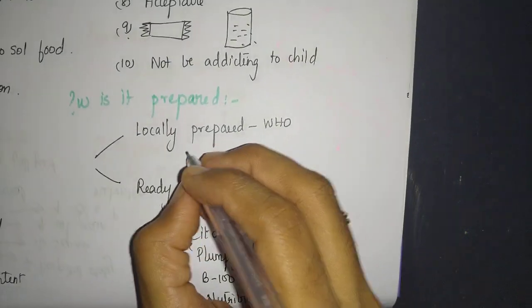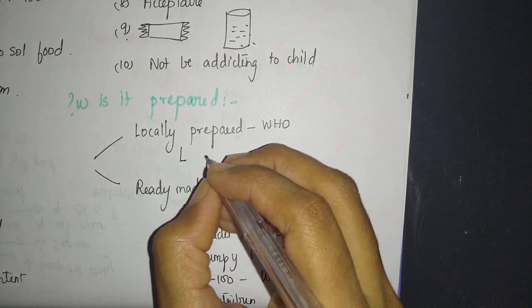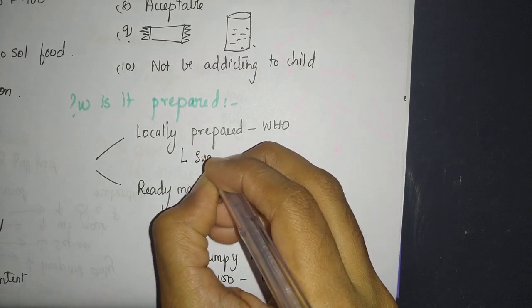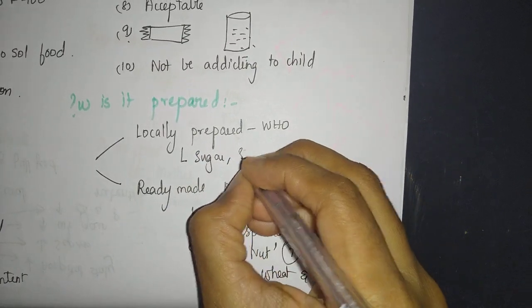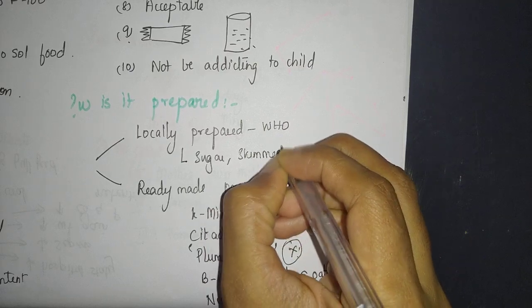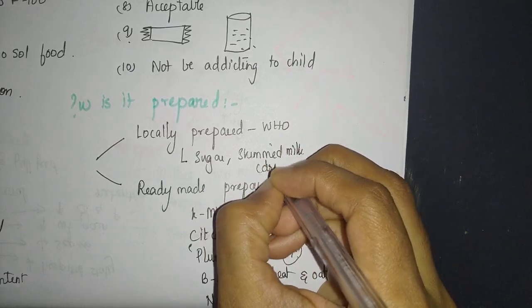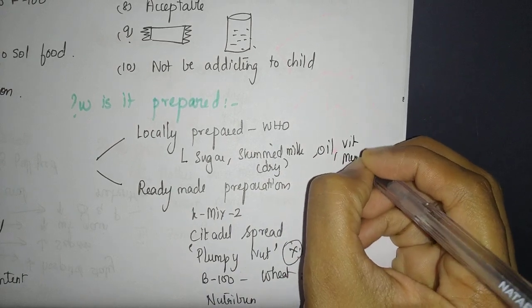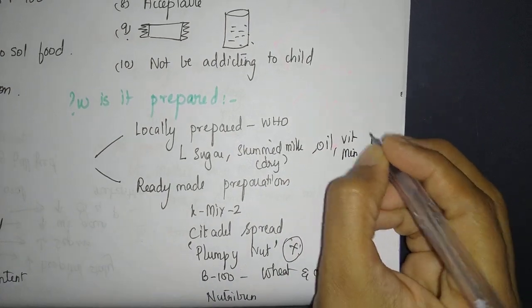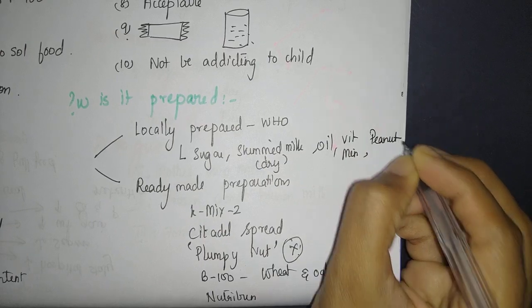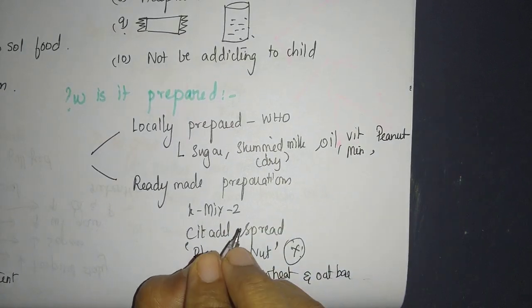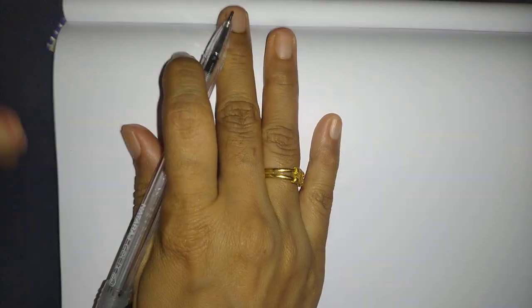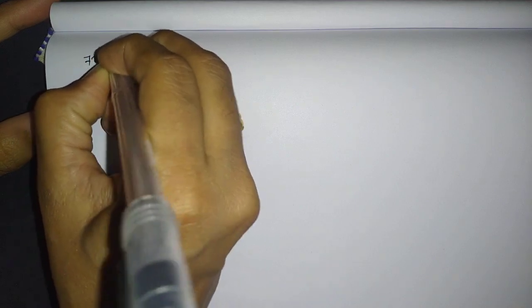What about locally prepared, and how about it in India? Any locally prepared should contain the basic ingredients of sugar, some dried skimmed milk, oil, and vitamin-mineral supplements should be added. Usually it is done with peanuts. India, as usual, we do not have anything that is locally prepared.